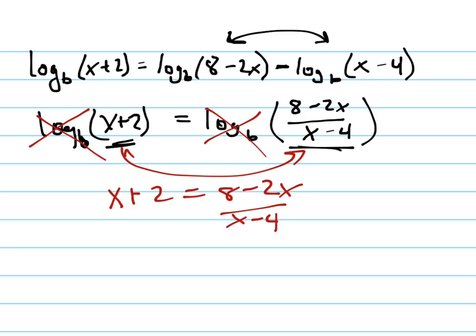Now you'll notice that this right here factors into, if I take a 2 out, I get 4 minus x and x minus 4, and I'll show you another trick. If you have 4 minus x and x minus 4, you can flip this.